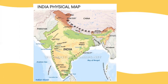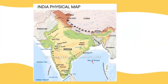Below the Northern Mountains we have the Great Northern Plains. The land in the Great Northern Plains is very fertile, so it is suitable for the cultivation of crops. Next is the Deccan Plateau region, which extends from north to south. On either side of the Deccan Plateau we have the Eastern Ghats and the Western Ghats. Between the Eastern Ghats and the Bay of Bengal we have the Eastern Coastal Plain, and between the Western Ghats and the Arabian Sea we have the Western Coastal Plain. The only desert of our country is the Thar Desert, located in Rajasthan.